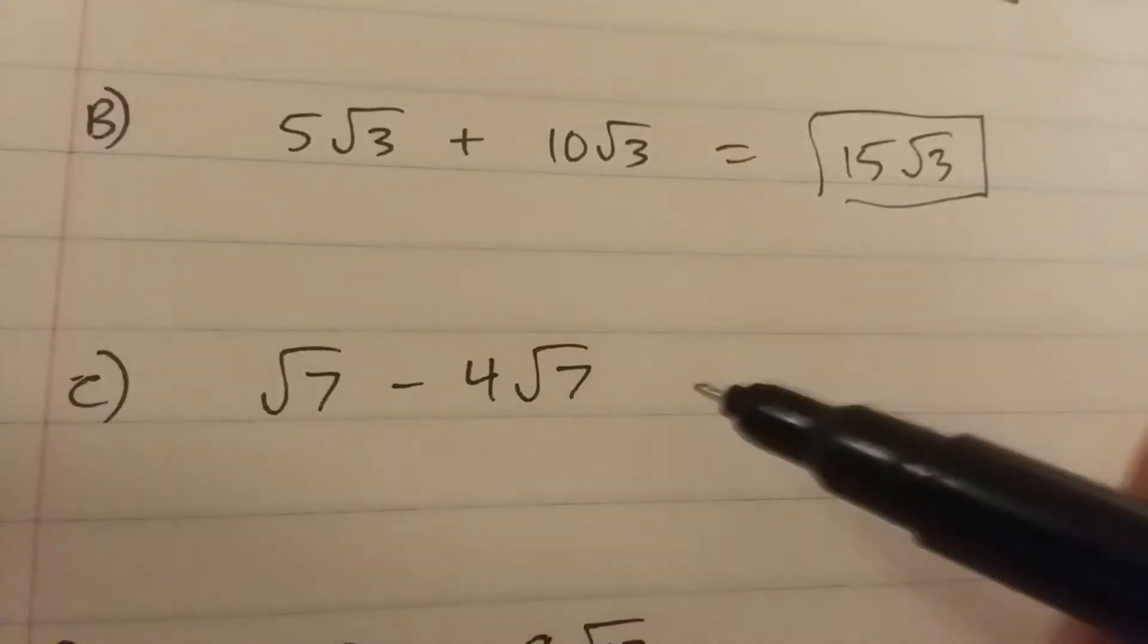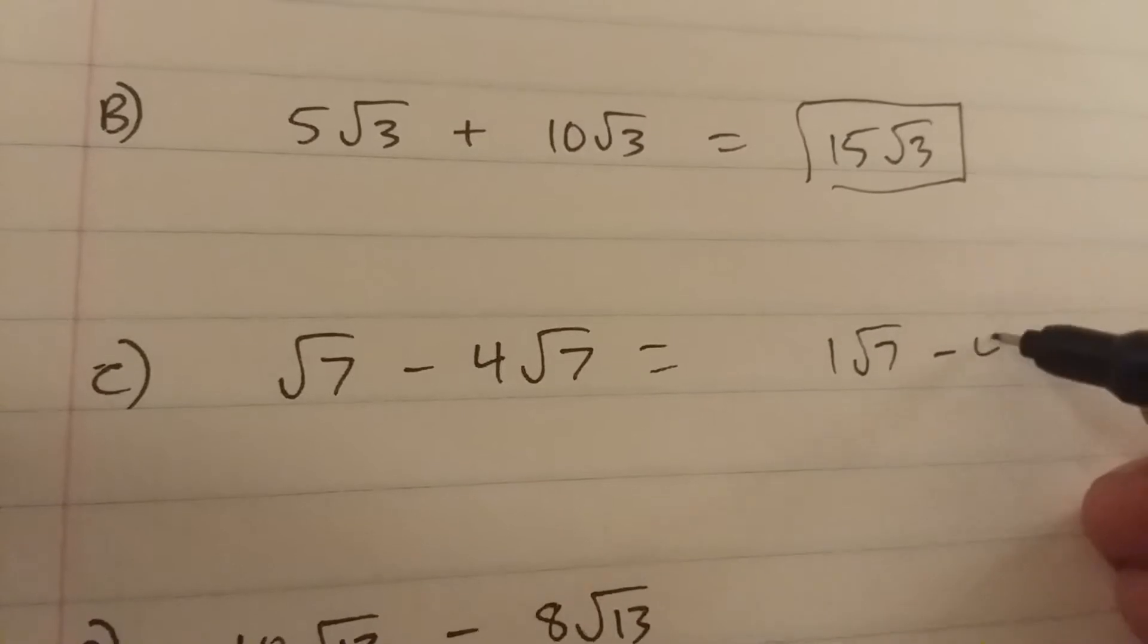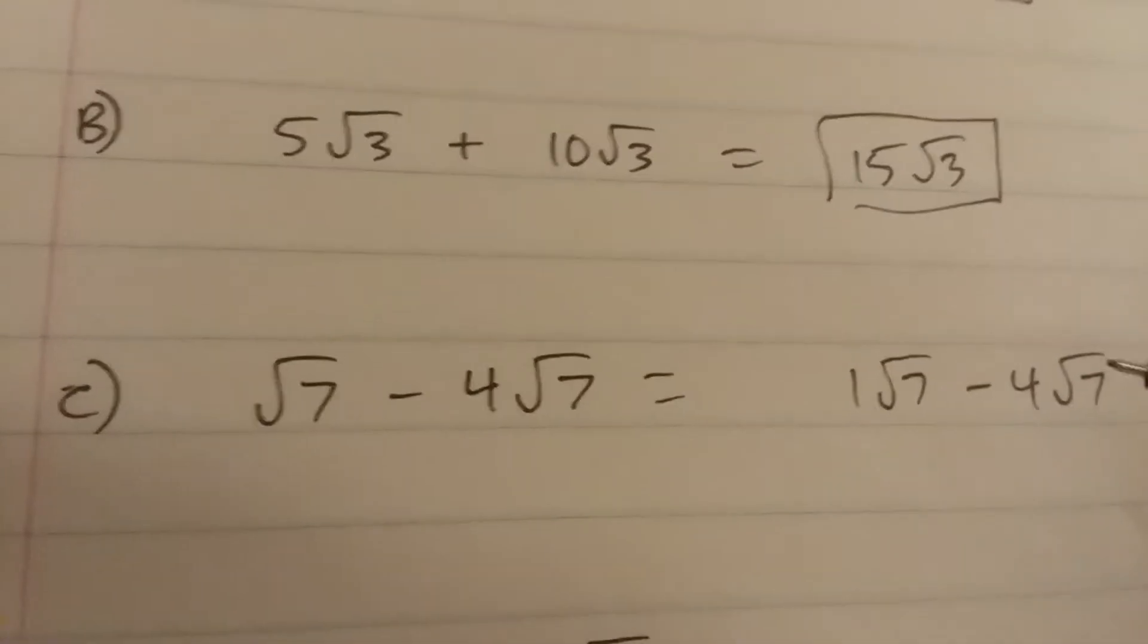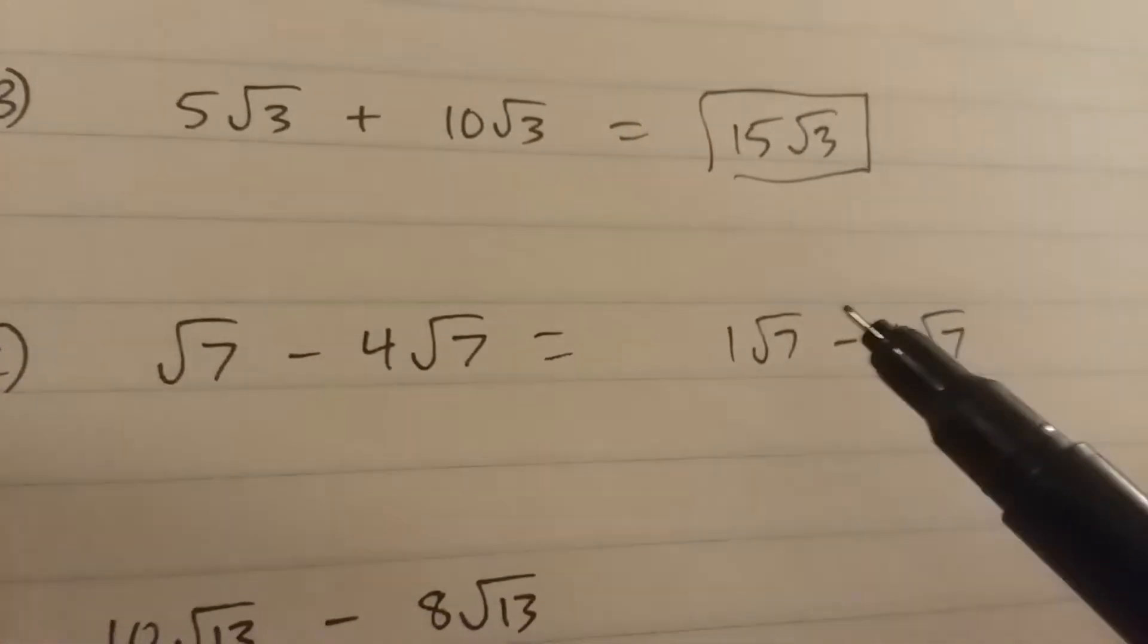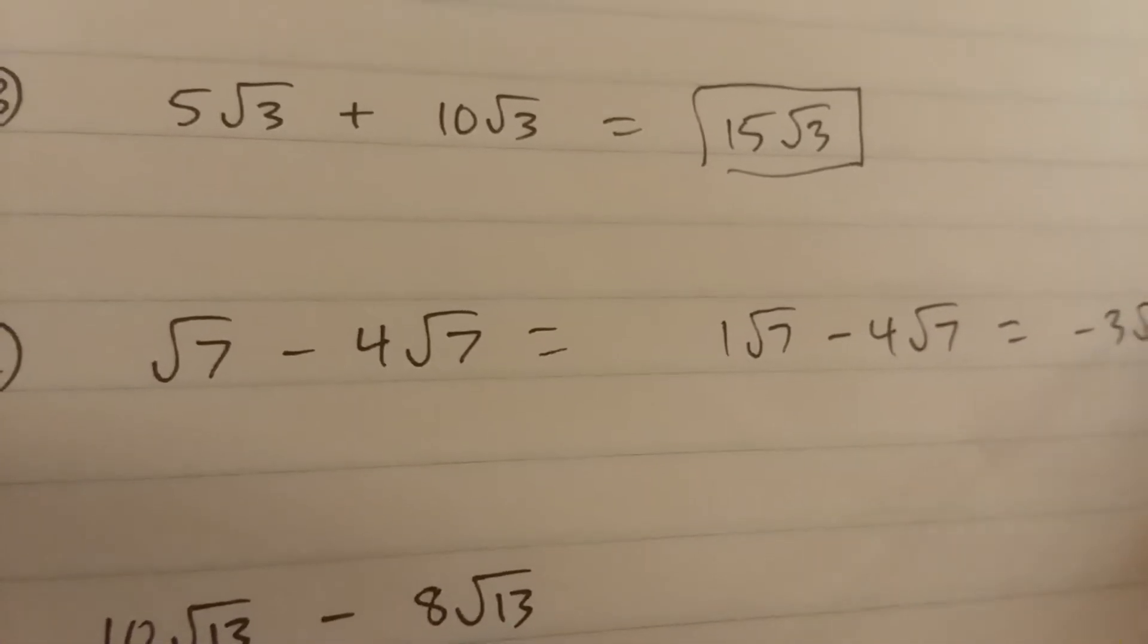The square root of 7 minus 4 square root of 7, that is the same thing as 1 times the square root of 7 minus 4 times the square root of 7. You're subtracting the coefficients. So it's going to be 1 minus 4 is negative 3. Negative 3 root 7.